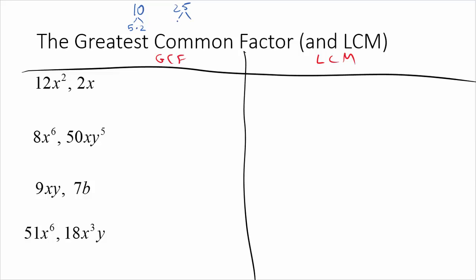So 10 can be split up into 5 times 2, and that's as far as we can go with that. 25 can be split up into 5 times 5. That's as far as we can go there. And since they both have a 5 in common, that would be the greatest common factor.